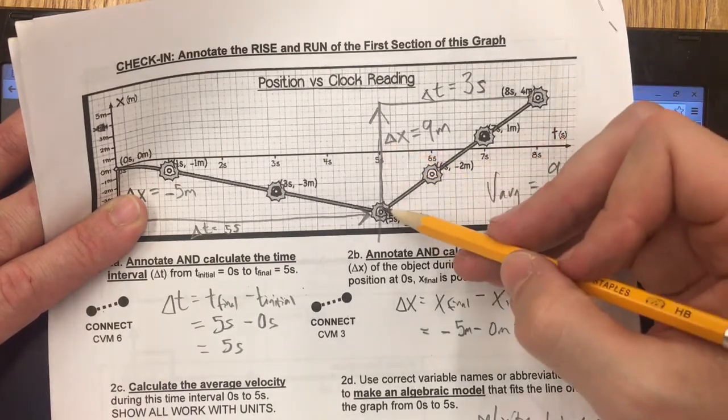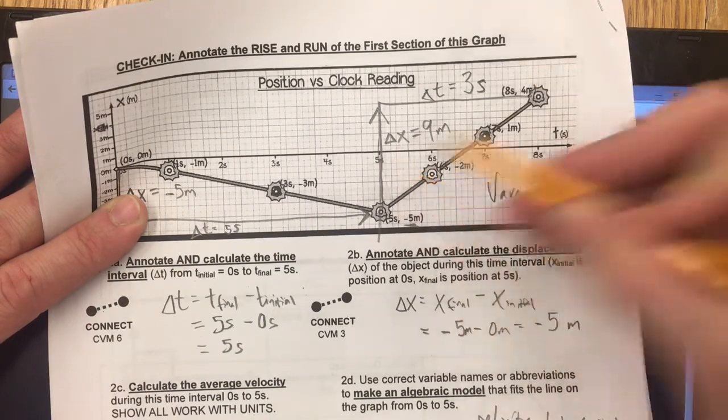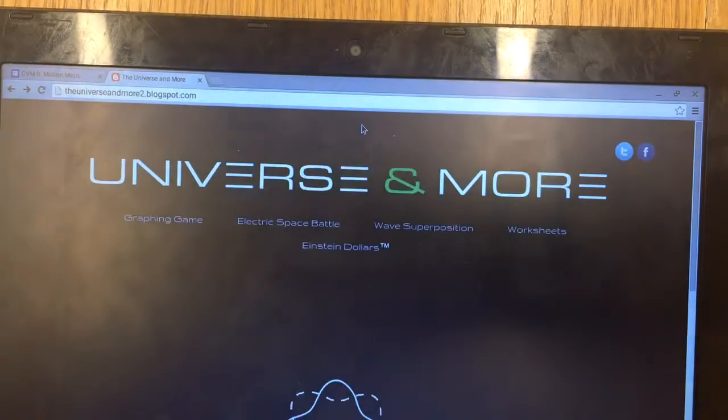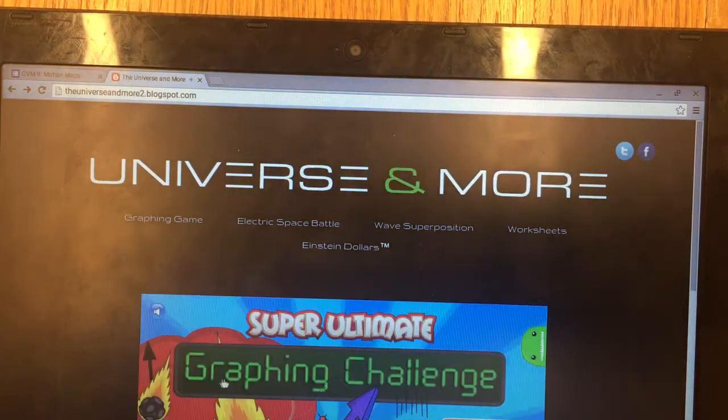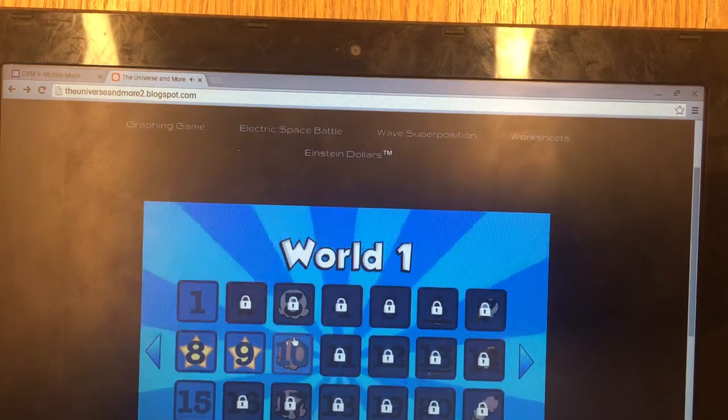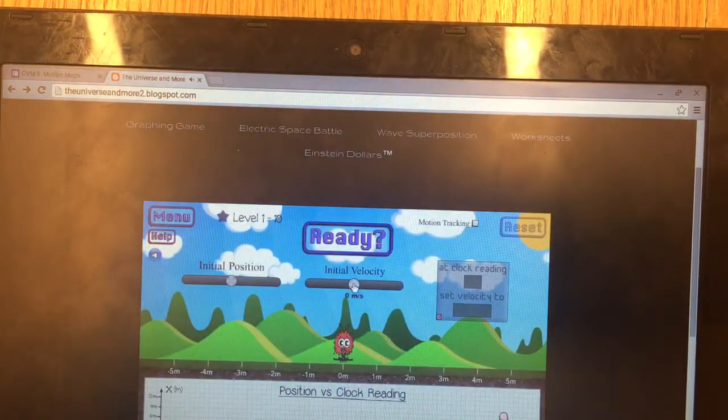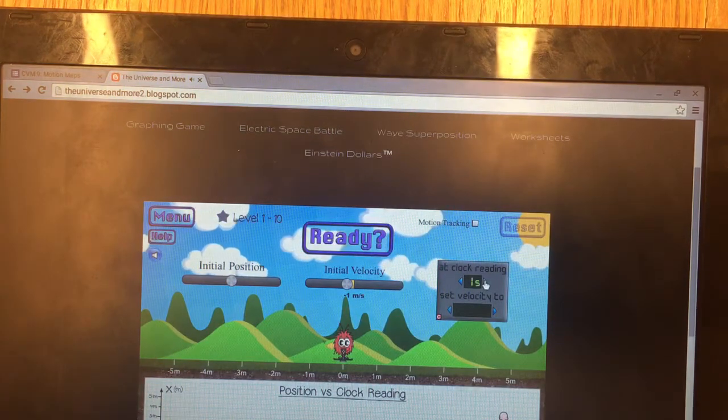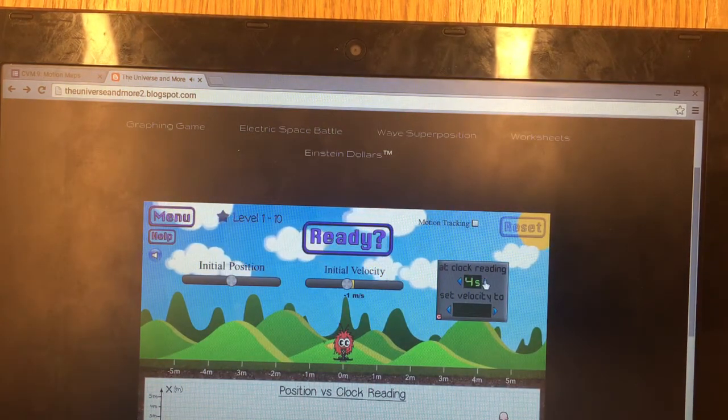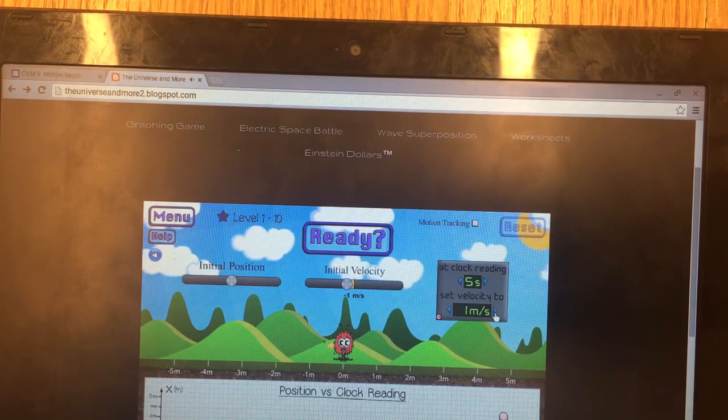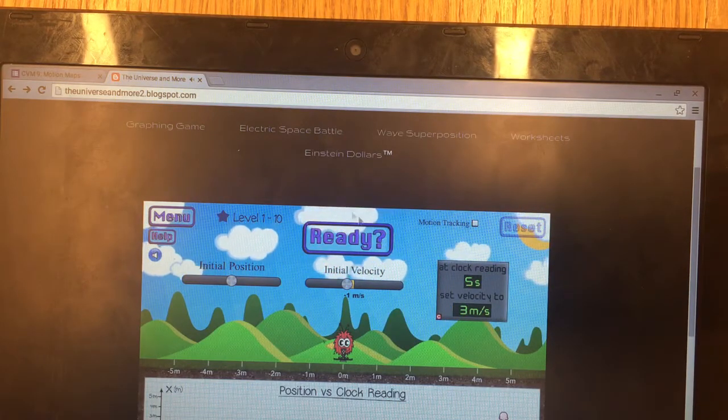That means that at a clock reading of five seconds, this guy has to change direction and speed up. That is, getting back to level one, he starts out at negative one meter per second, but at a clock reading of five seconds, he changes his velocity to positive three meters per second.